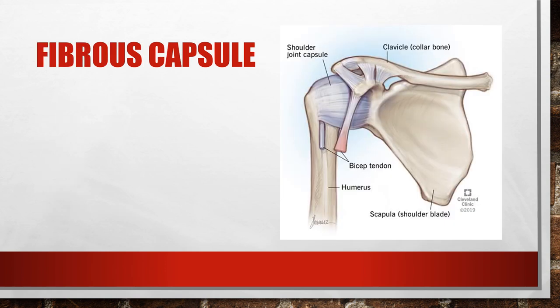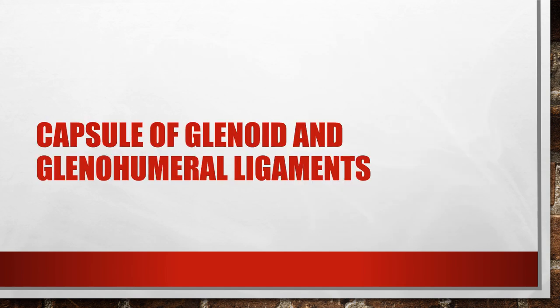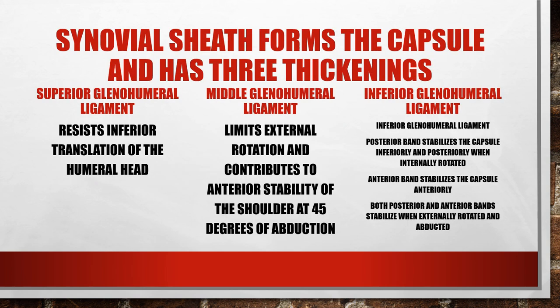The fibrous capsule surrounds the head of the humerus as it goes into the glenoid cavity and contains the glenohumeral ligaments. The synovial sheath forms the capsule and has three thickenings. The capsule is broken down into superior, middle, and inferior parts. The superior part becomes thickened, creating the superior glenohumeral ligament.